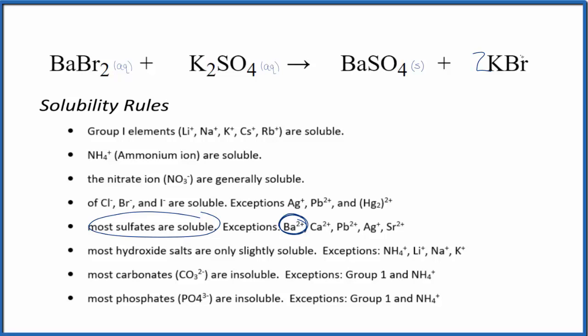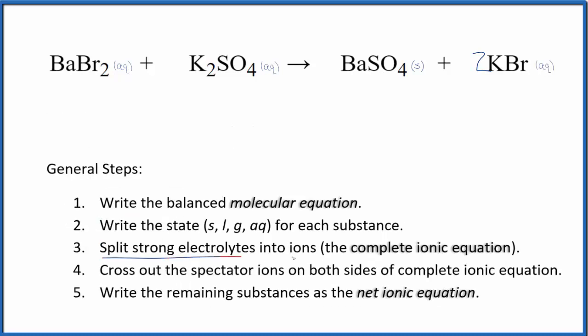Then for potassium compounds and bromide compounds, very soluble, Aq. So we have our states. Now we can split the strong electrolytes into ions for the complete ionic equation. Barium's in group two, that'll be two plus. And the bromide ion, each one is one minus. So we have Ba2+ the barium ion. I'll write the states later.